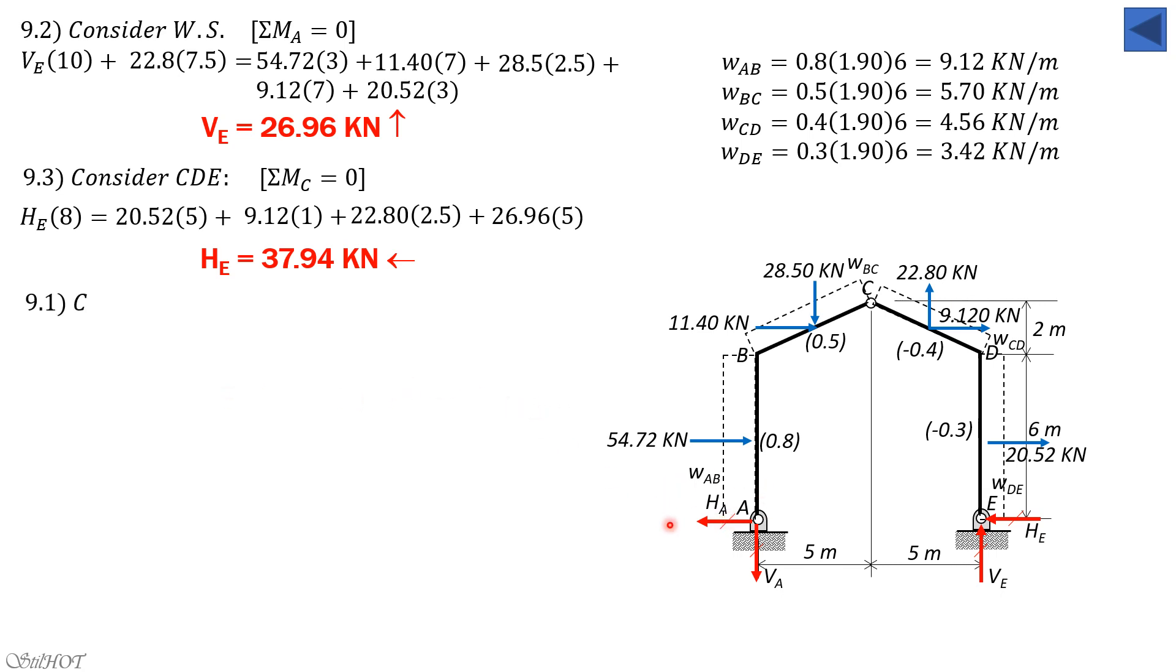The only unknown left is H_A. Let's consider portion ABC or the whole system, summation forces, summation moment about E equals 0 to solve for V_A. So V_A times 10, that's counterclockwise, plus 28.5 times 7.5 (5 plus 2.5), that's counterclockwise. Then the rest is clockwise, so beginning with 54.72 times 3, then 11.4 times 7, then plus 9.12 times 7, plus 22.8 times 2.5, plus 20.52 times 3. So solving for V_A, V_A is 21.26 kilonewtons.